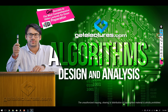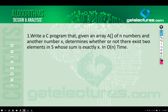Hello everyone. Let us look at the first algorithm that we are going to discuss here. The first question, or you can say the algorithm says: write a C program given an array A of n numbers and a number x. Determine whether or not there exist two elements in S whose sum is exactly equal to x.